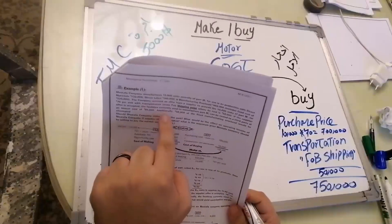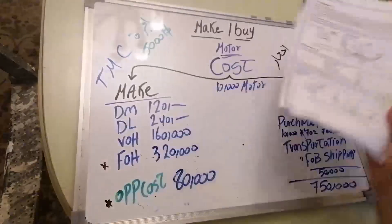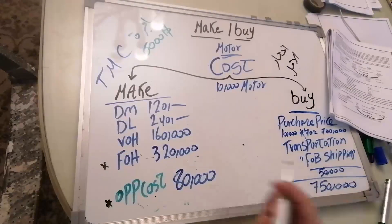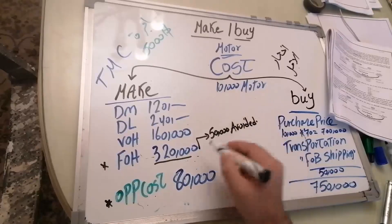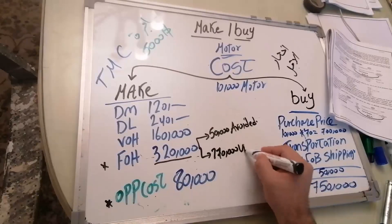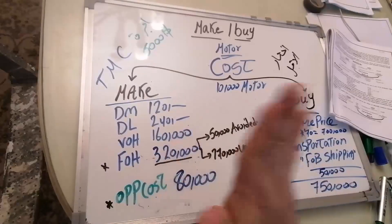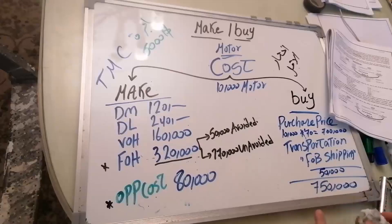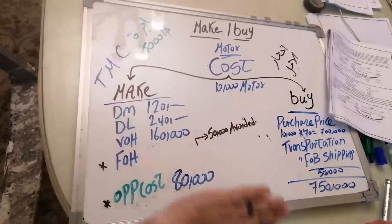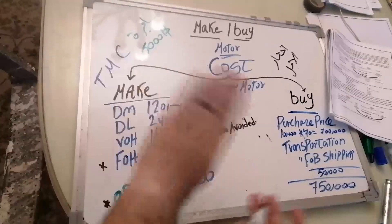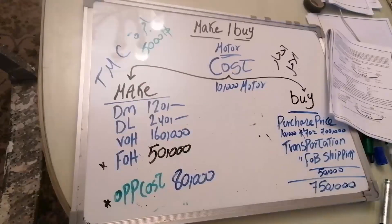Additionally, 50,000 of the fixed manufacturing overhead would be eliminated (avoidable). Write 'avoided' next to it. You see the 320,000? From that, 50,000 is avoidable, leaving 270,000 unavoidable. The 270,000 exists in both make and buy, so instead of adding it to the buy side, we erase it from both. We only work with the avoidable 50,000.